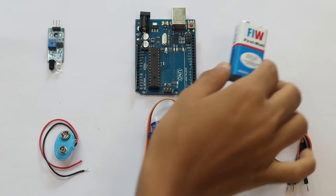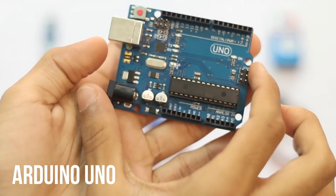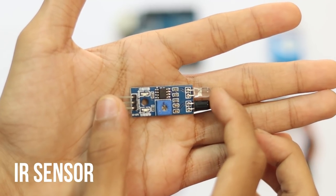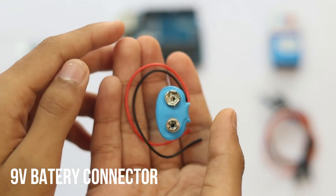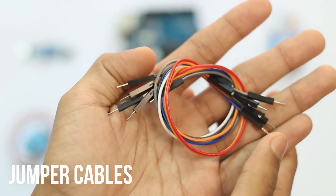To make your soap dispenser, you will need a 9 volt battery, an Arduino Uno, an IR sensor (infrared sensor), a manual battery connector, a micro servo, and some jumper cables.